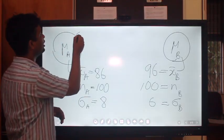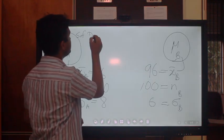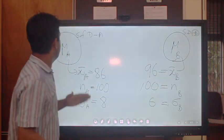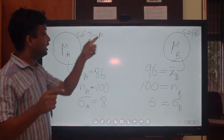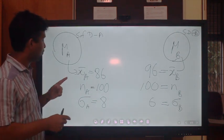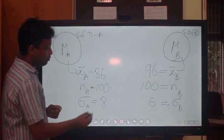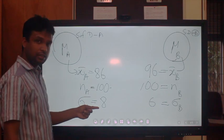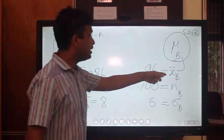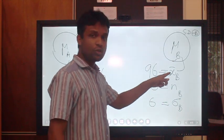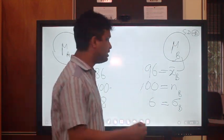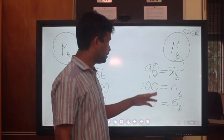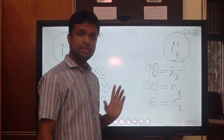Let's take the numerical example. We have two soft drink companies. Soft drink A has a sample of 100 bottles with mean x-bar A = 86 and standard deviation = 8. For soft drink B, x-bar B = 90, sample size nB = 100, and standard deviation = 6. This represents the sugar concentration.